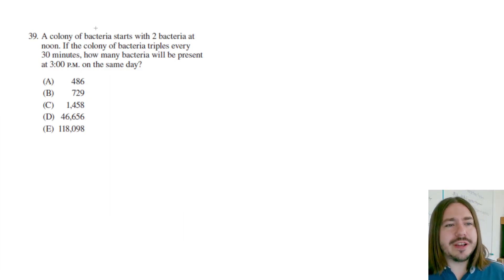Hey y'all, welcome back. Number 39 here with a word problem. A colony of bacteria starts with two bacteria at noon. If the colony of bacteria triples every 30 minutes, how many bacteria will be present at 3 p.m. on the same day?